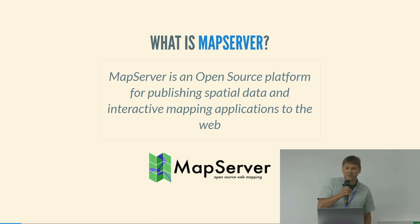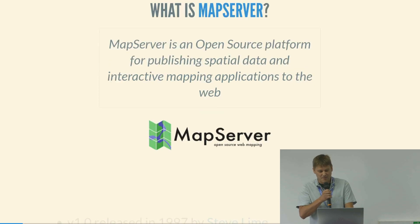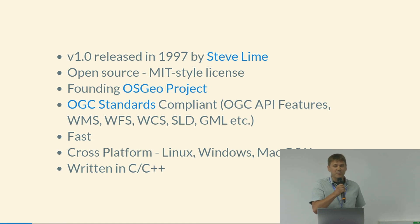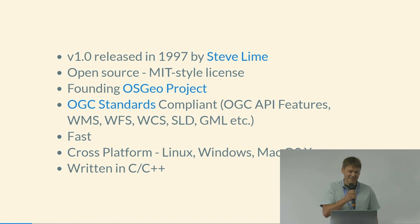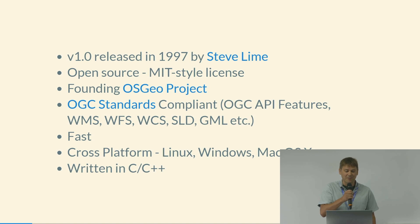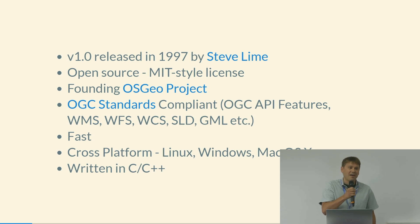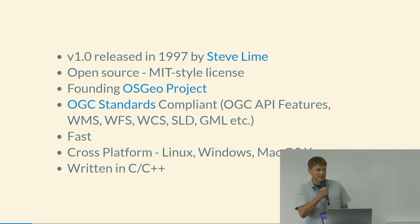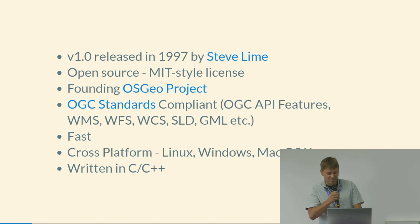MapServer is used for serving out data. It's server-side, serves out spatial data to clients — very similar to GeoServer. It's been around for a number of years; version one was released in 1997. It's open source and a founding OSGeo project. It covers all the OGC standards — the traditional ones, WMS and WFS — and now in version 8 of MapServer it's got the OGC Features API, with hopefully more of the newer APIs to be implemented.